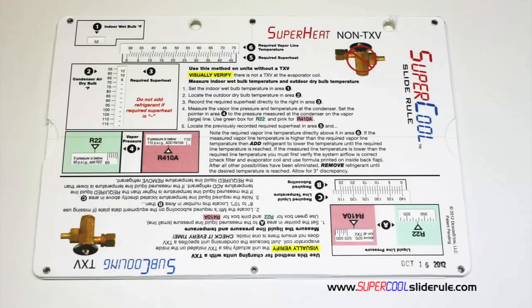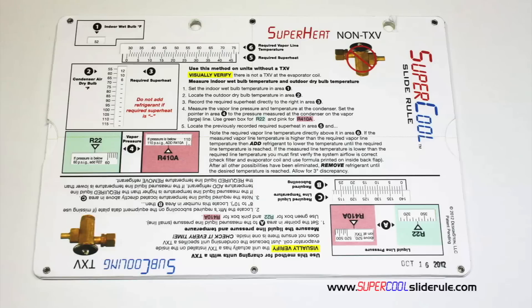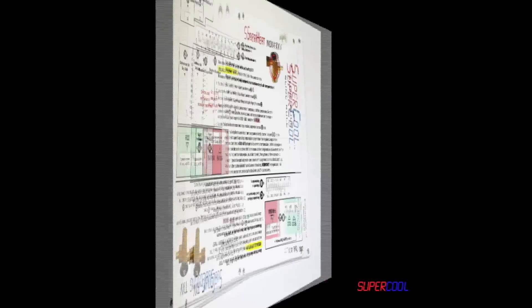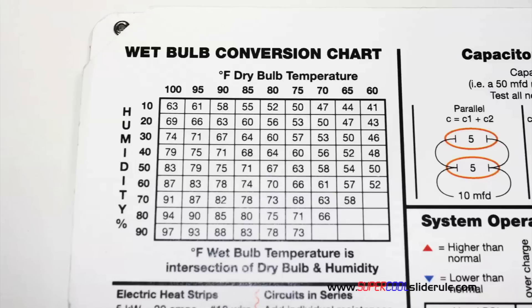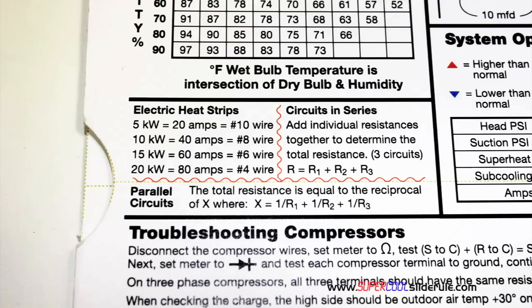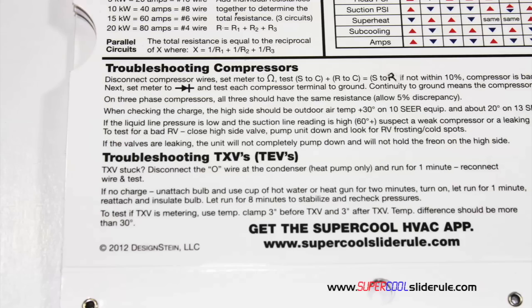This one tool will allow you to charge a system with R22 or R410A in either the superheat or subcooling method. The back cover contains required formulas. It has capacitor rules and practices, a wet bulb conversion chart, how to perform computations on series or parallel circuits, an electric heat strip guide, a complete system troubleshooting diagnostic chart, and how to troubleshoot compressors and TXV.